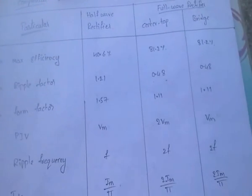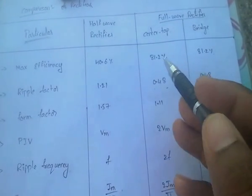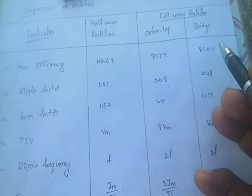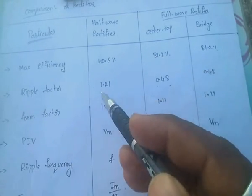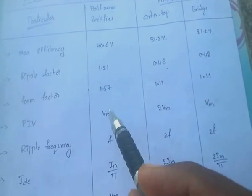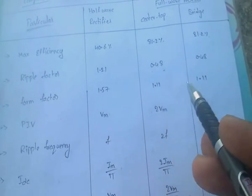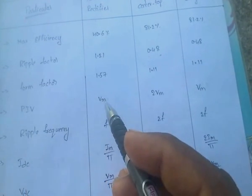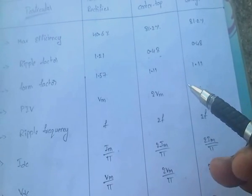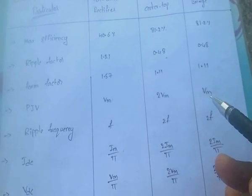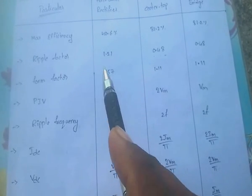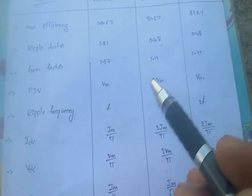To recap: maximum efficiency is highest in full wave rectifier at 81.2% for both center tap and bridge. Ripple factor is 1.21 for half wave and 0.48 for full wave. Form factor is 1.57 for half wave and 1.11 for full wave. Peak inverse voltage is V_m for half wave, 2V_m for center tap, and V_m for bridge. Ripple frequency is F for half wave and 2F for both center tap and bridge.